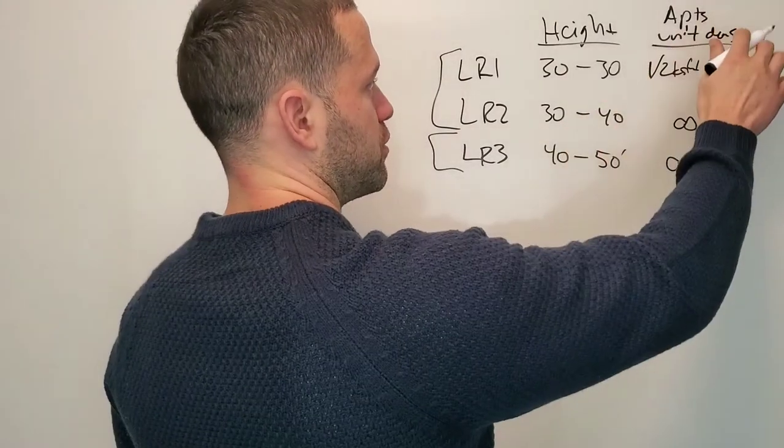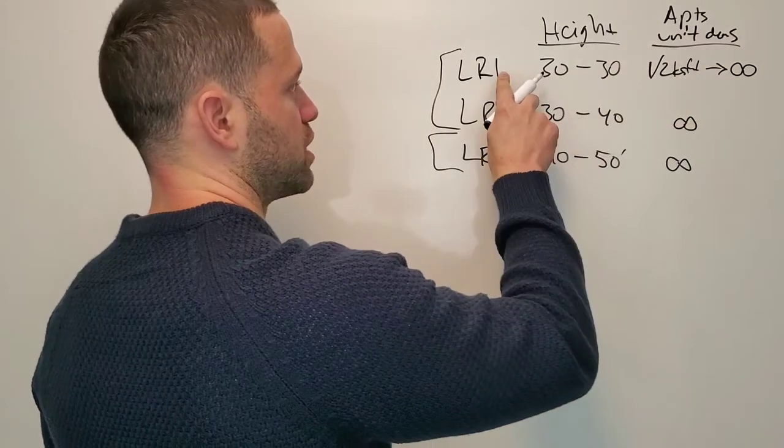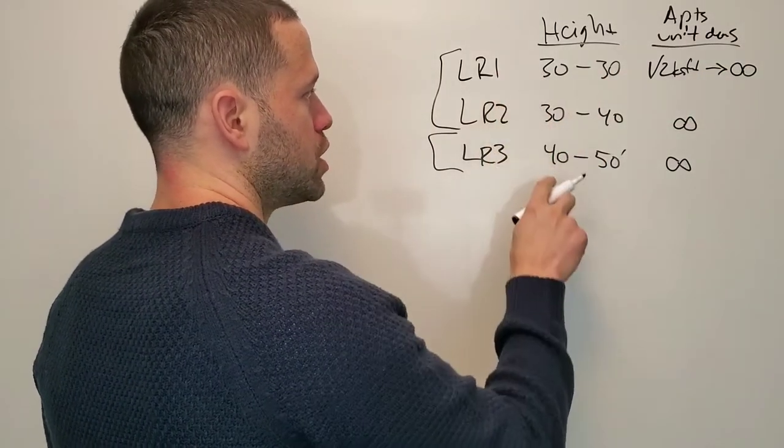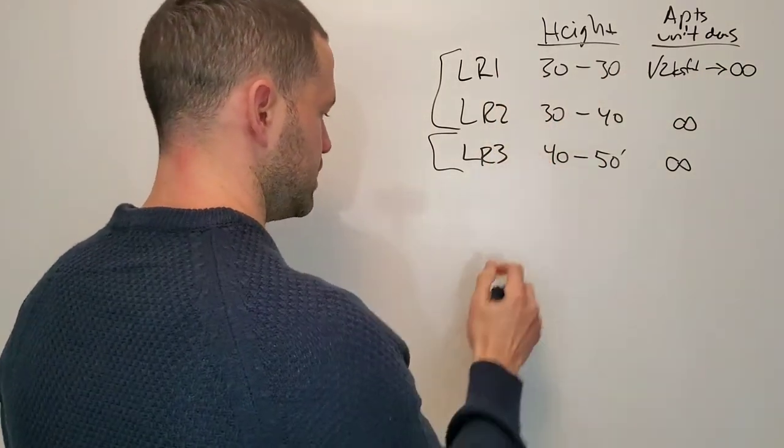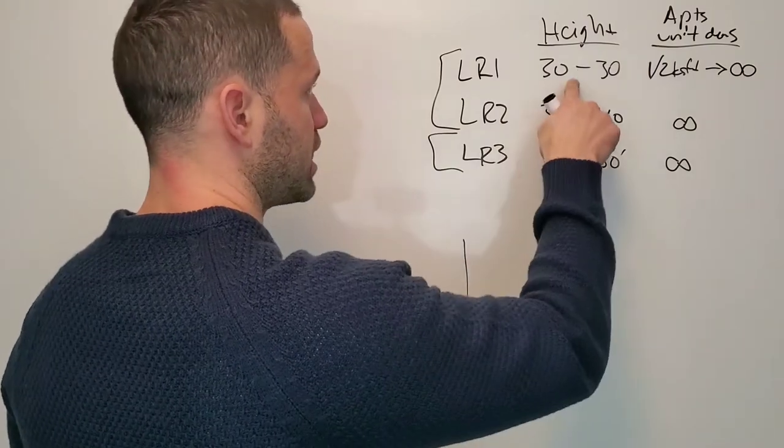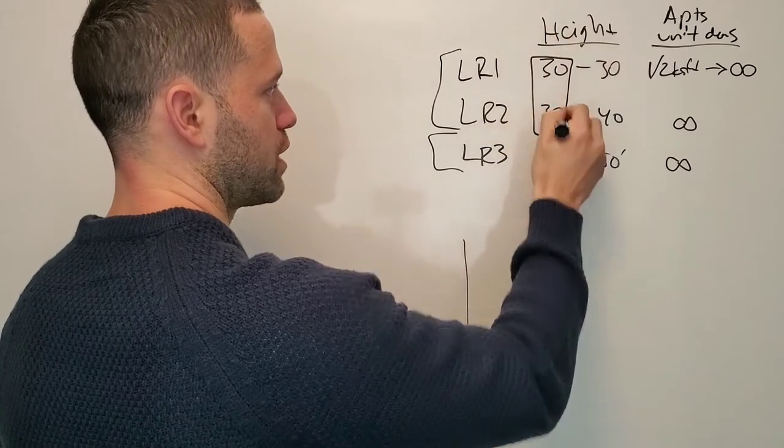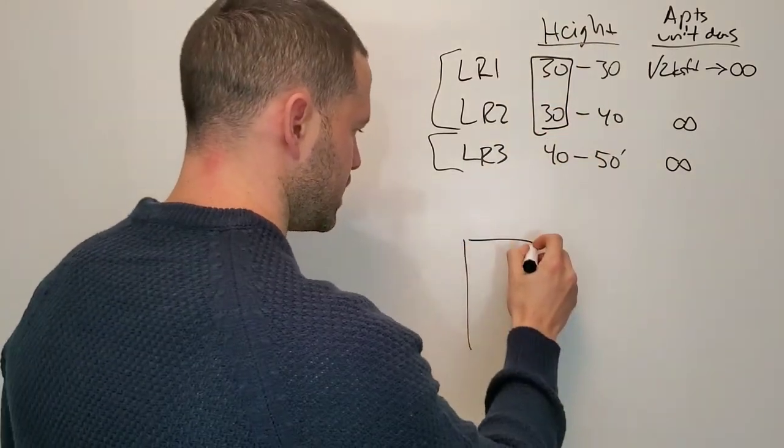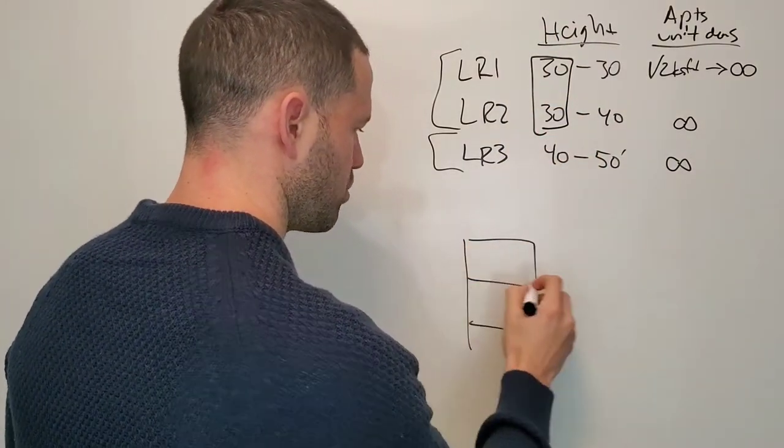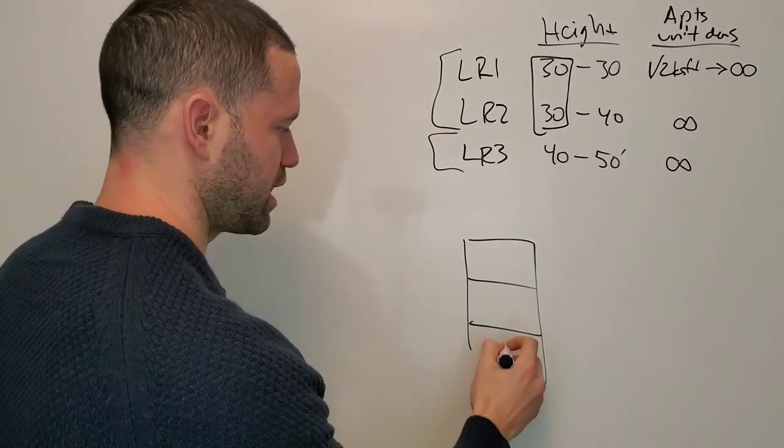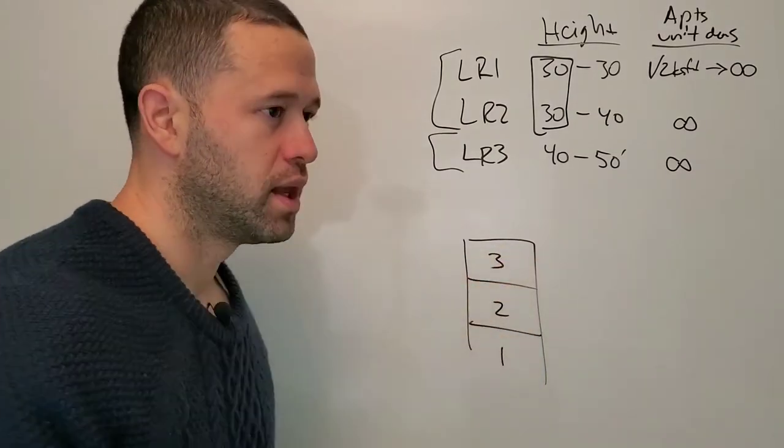Let's look at height limits. If your height limit was 30 feet back in the day for LR1 and LR2, in every instance they were pretty much building townhomes because that gives you a three-level townhome, which is a very comfortable height.